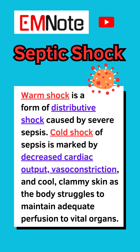Septic shock includes warm shock and cold shock. Warm shock is a form of distributive shock. Cold shock is marked by decreased cardiac output, vasoconstriction, and cool, clammy skin.